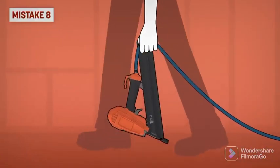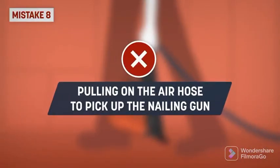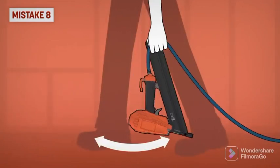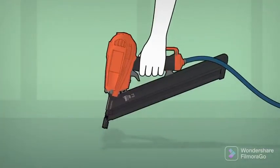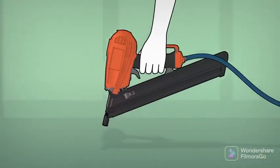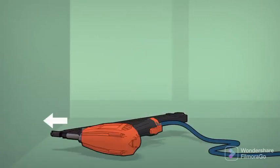Mistake 8: Pulling on the air hose to pick up the nailing gun. The nailing gun can be directed at you or someone else. Always pick it up by the handle. If you need to put down the nailing gun momentarily, place the nose towards a wall in case the tool accidentally fires.